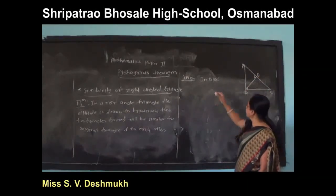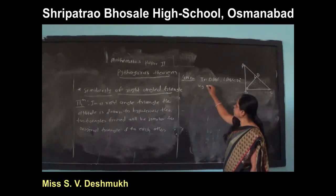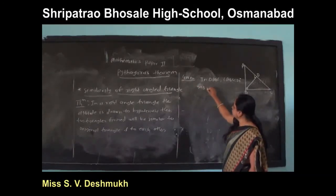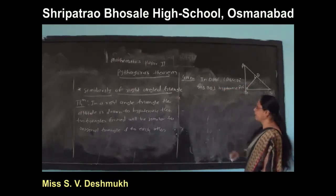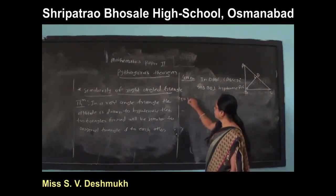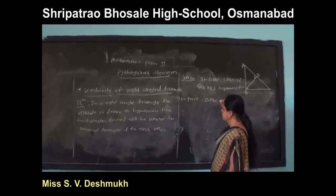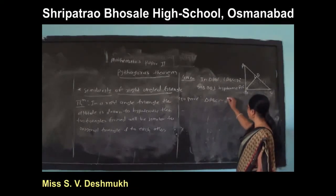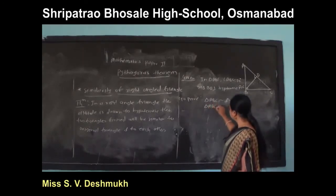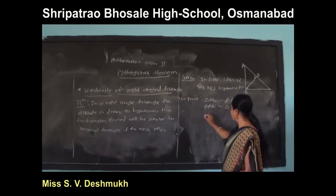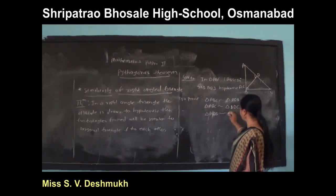Given triangle ABC where angle ABC equals 90 degrees and BD is perpendicular to hypotenuse AC. To prove: triangle ABC is similar to triangle ADB, and triangle ADB is similar to triangle BDC.